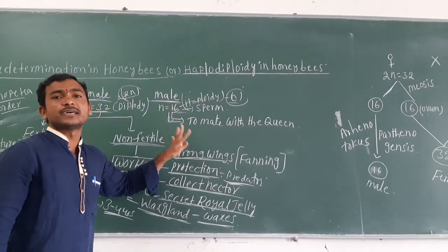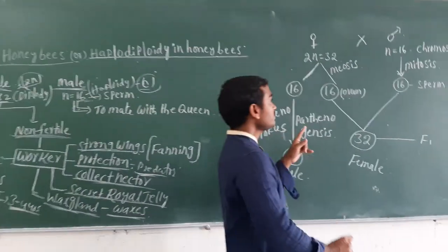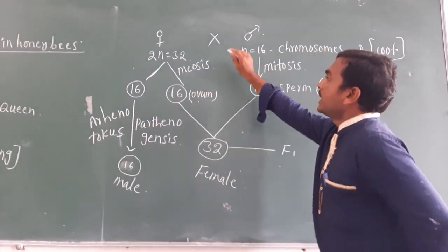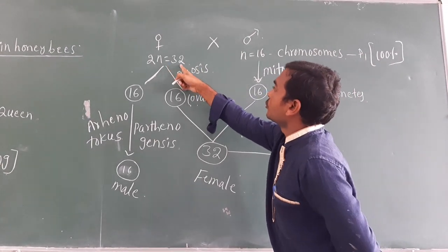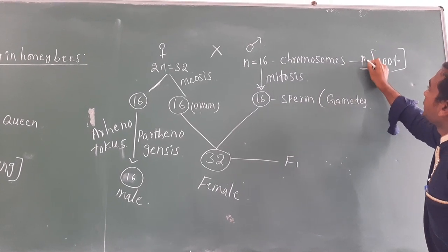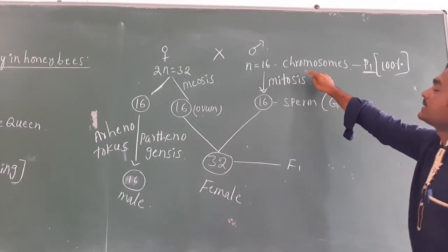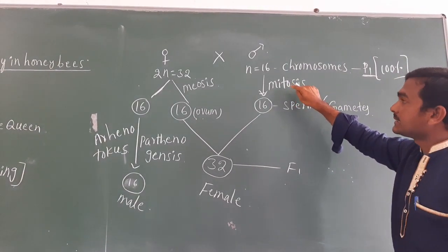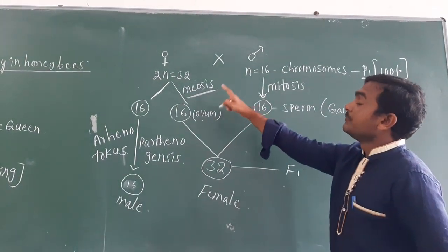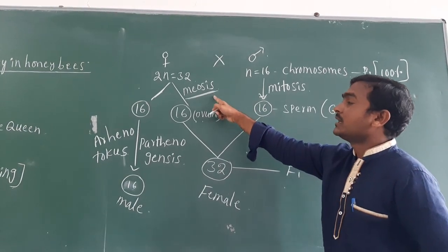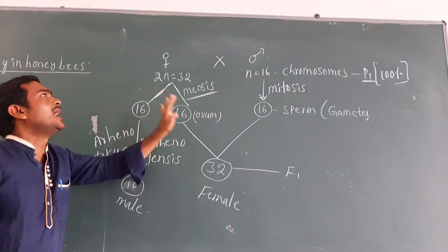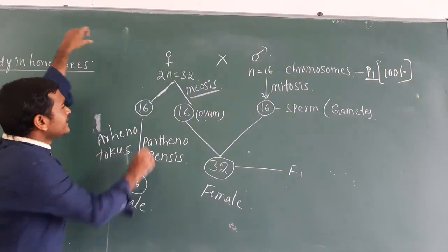Now we go to sex determination in honeybees — the haplodiploidy type. In the parental (P1) generation, the female has 32 chromosomes. The female undergoes meiosis cell division, which reduces the chromosome number from 32 to 16, forming ova as gametes.